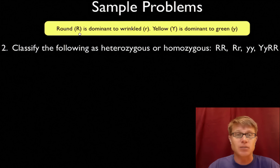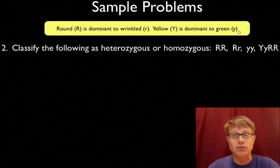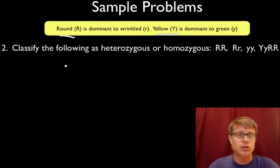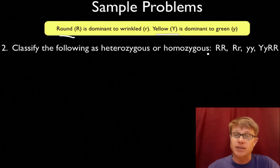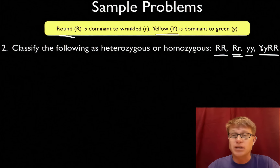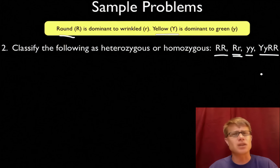We've got some traits defined: round peas are big R, wrinkled peas are little r, yellow is big Y, and green is little y. Generally, whatever is the dominant trait gets the capital letter — round gets big R and yellow gets big Y. Question two: classify the following as heterozygous or homozygous. Heterozygous means you have different alleles; homozygous means you have the same. Big R, big R would be homozygous dominant. Big R, little r would be heterozygous — also called hybrid. Little r, little r would be homozygous recessive. And big Y, little y with big R, big R would be heterozygous for yellow, homozygous dominant for round.